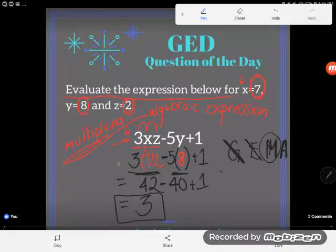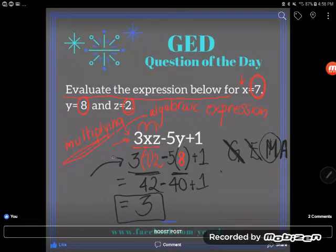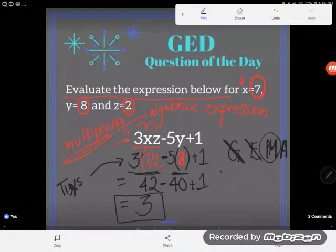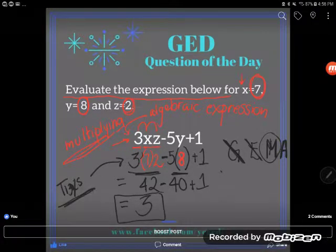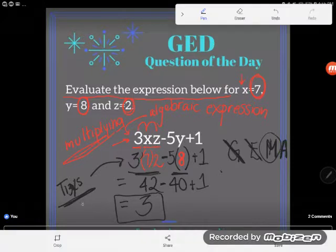And just FYI, if you are a lazy person like I know a lot of my students are, you could have typed this entire expression—3 times 7 times 2 minus 5 times 8 plus 1—into your TI-30XS exactly the way it appears, and you know what? It would go straight to the answer of 3.